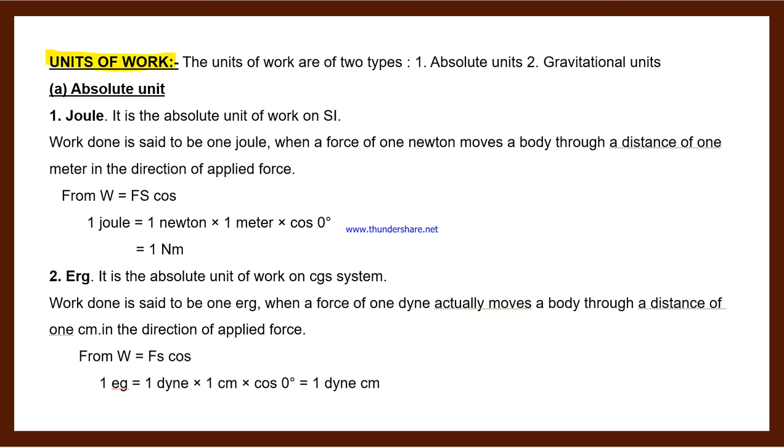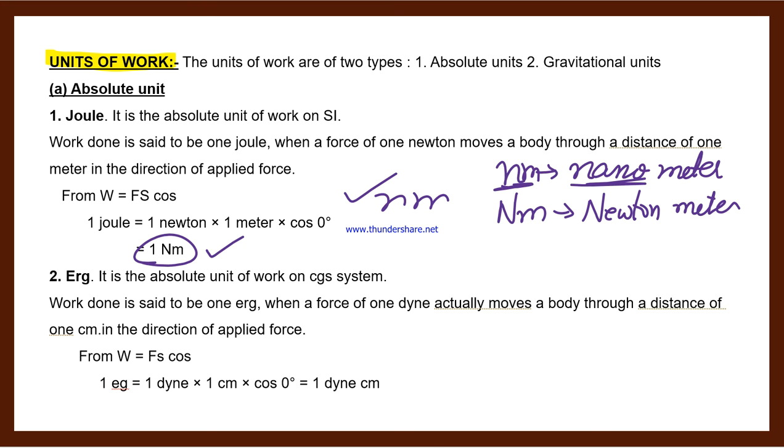Next we have units of work. These theory questions you may not get directly in the paper, but MCQs can be asked. Like one joule equals what? You'll get options like one nanometer or one newton meter. If small 'n' is there, it means nano. You might be asked about nanometer.